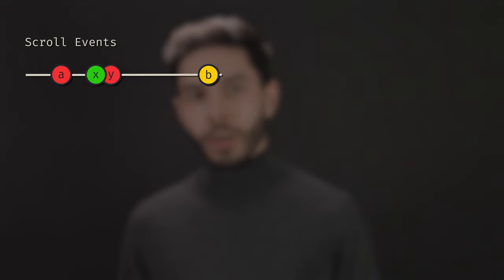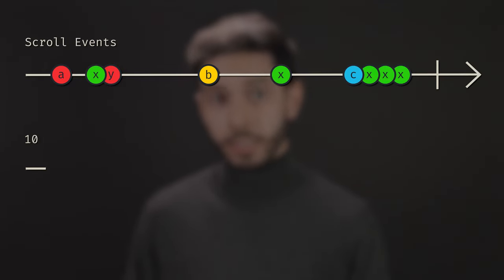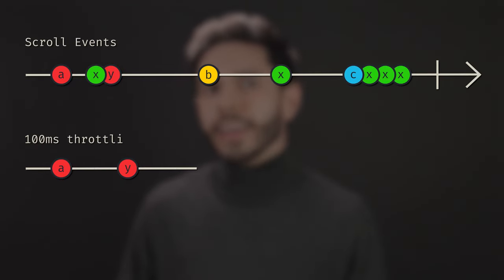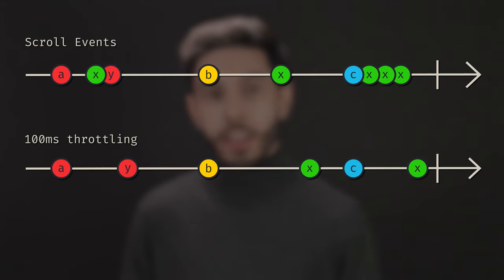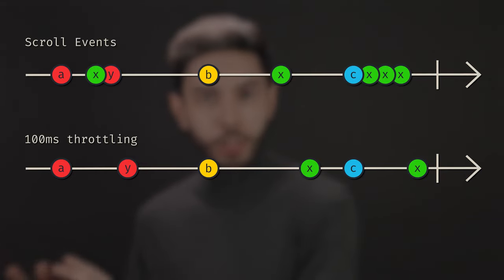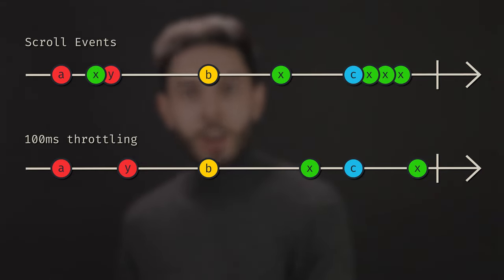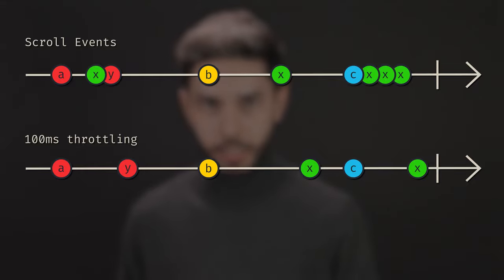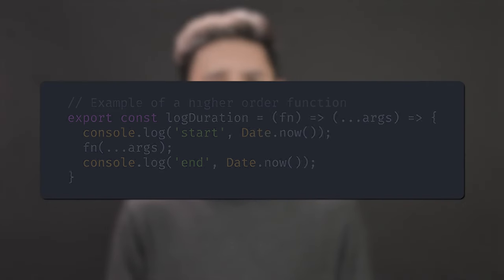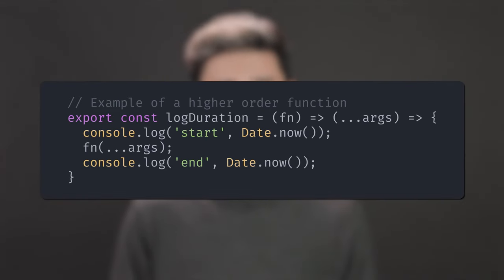The first one is throttling. Define a duration — say, 100 milliseconds, for example. Throttling the scroll events by 100 milliseconds means letting a scroll event pass, then ignoring all other scroll events for the next 100 milliseconds. To use throttling, we can create a higher order function — a function that receives a function and returns another function.